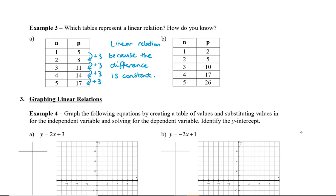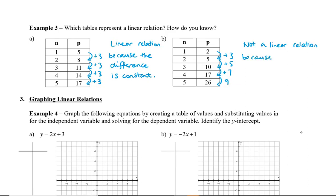Let's take a look at the second example. The n values again increase by 1. But when we look at p, the first increase is by 3, then from 5 to 10 it increases by 5, then by 7, then by 9. So this one is not a linear relation because the difference does not stay the same — the difference is not constant.